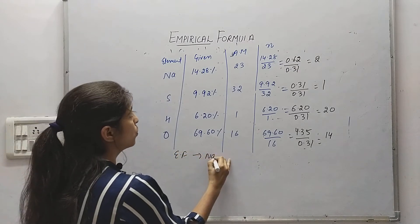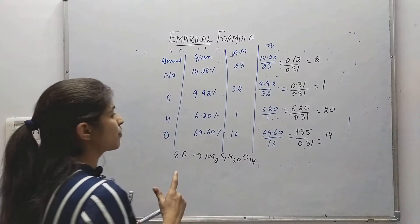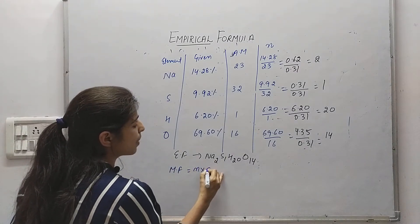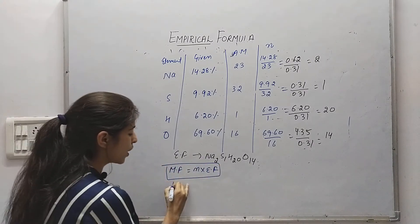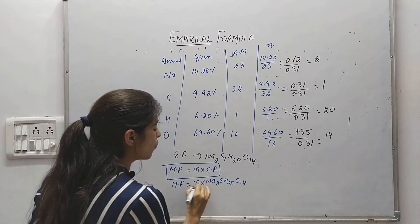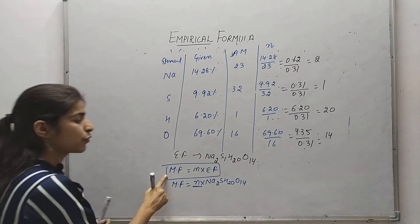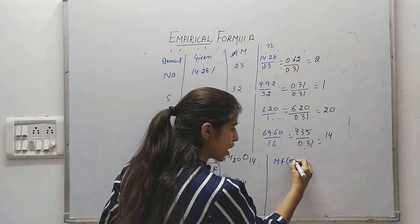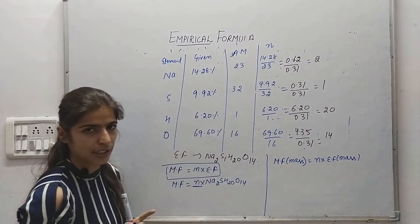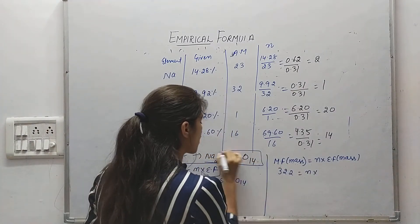The empirical formula is Na2SH20O14. But we also need to calculate the molecular formula. The formula is: molecular formula = n × empirical formula. The molecular mass is given as 322. So n = molecular mass divided by empirical formula mass.